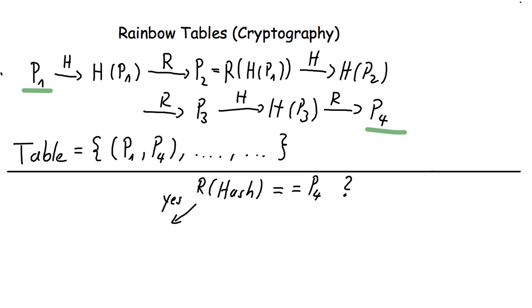He looks up the corresponding starting word of p4, which is p1. He applies the hash on p1, uses the reduction function, uses the hash again, uses the reduction function again. And then he gets p3, which is the plaintext password.